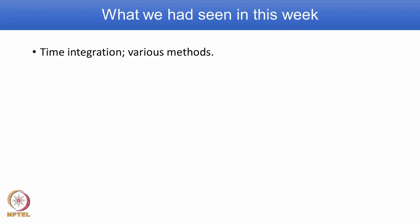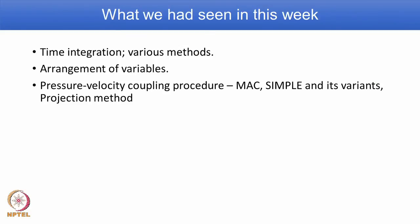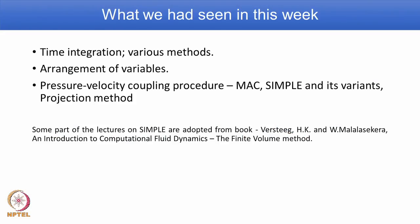This week we have seen in detail: time integration methods including the Euler method, multipoint methods, and predictor-corrector approaches for higher order accuracy; arrangement of variables — collocated, staggered, and semi-staggered — and the advantages of each; the need for pressure-velocity coupling; and detailed explanation of three methods: the MAC algorithm, SIMPLE algorithm, and projection method. Some parts of the lectures on SIMPLE are adopted from the book 'The Finite Volume Method' by Versteeg and Malalasekera. Thank you and we will see you next week with another interesting topic.